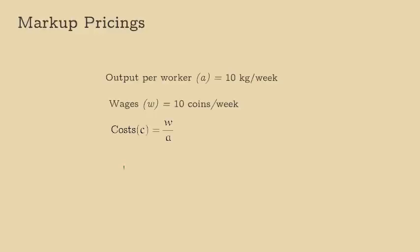So, 10 coins per week, divided by 10 kilograms per week, gives 1 coin per kilo.